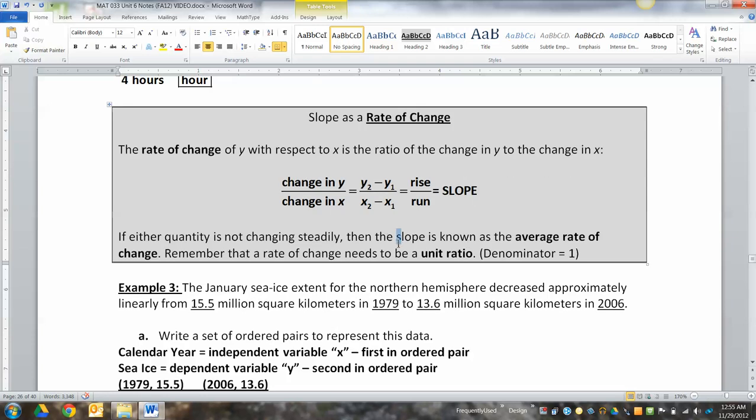And that's what we wrote down here is if either quantity is not changing steadily, then the slope is known as the average rate of change. Remember that a rate of change needs to be a unit ratio. Unit ratio, unit uni means one, like the game of Uno, you call out Uno when you have one card left or a unicycle only has one tire, right?